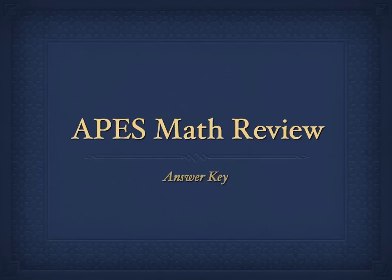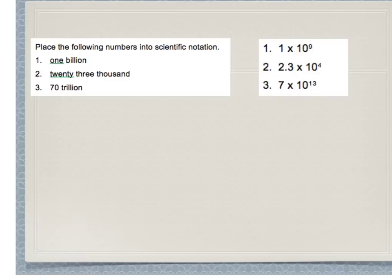Hey APES students, I'm coming to you live from the airport, so bear with me if there's any background noise. I'm going to go through the math problems you were assigned last review session for the APES math review sheet. Most of you turned that in via email, but I want you to take that back out. We're going to go through the answer key. You'll check your answers, and if there are any discrepancies — meaning if you got any wrong — you need to redo them showing all work, using all units. The problem is on the left and the answer key is on the right, so just see if these are the answers you got.